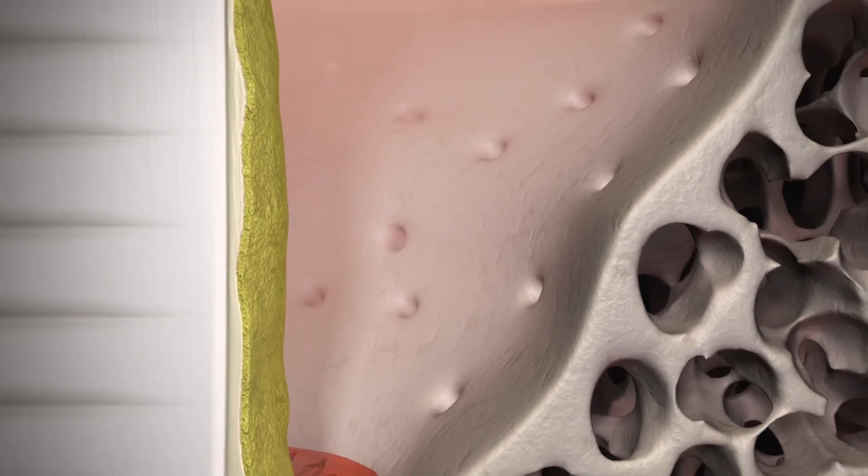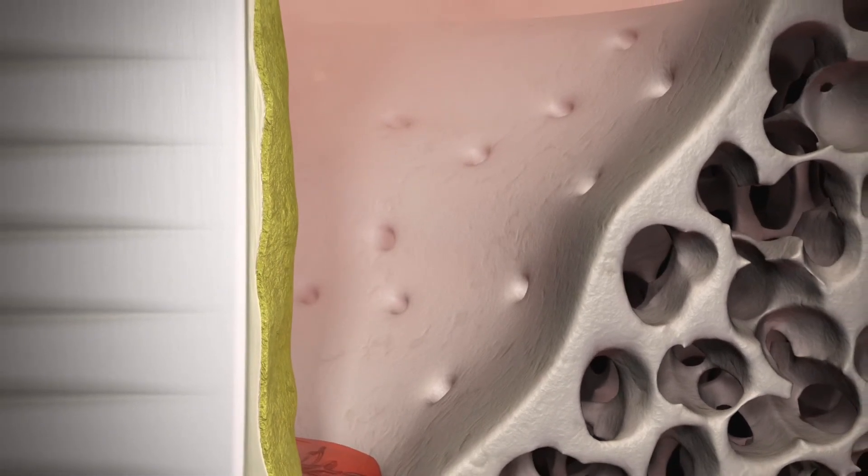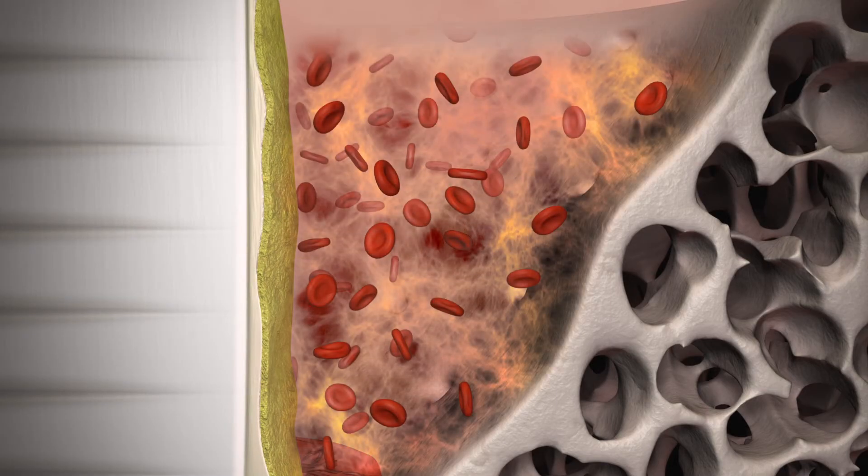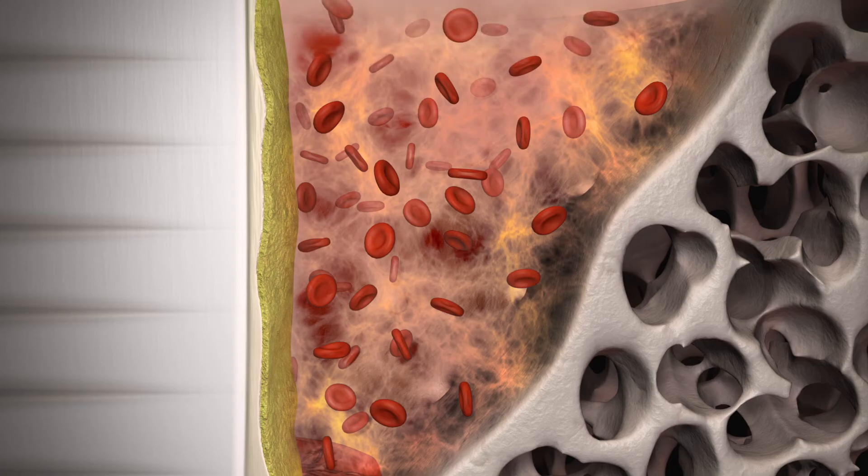Once the flap is closed, the periodontal defect fills with a blood coagulum of fibrin and erythrocytes. The coagulum is later replaced by granulation tissue which serves as the skeletal structure for wound healing and regeneration.